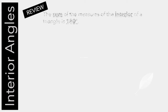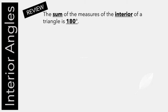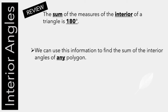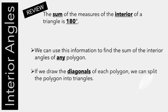So to review: when we were studying triangles, we learned that the sum of the measures of the interior angles of a triangle is 180 degrees. Now we can use this information to find the sum of the interior angles of any polygon. If we draw the diagonals of each polygon, we can split the polygon into triangles. Let me show you how this works.